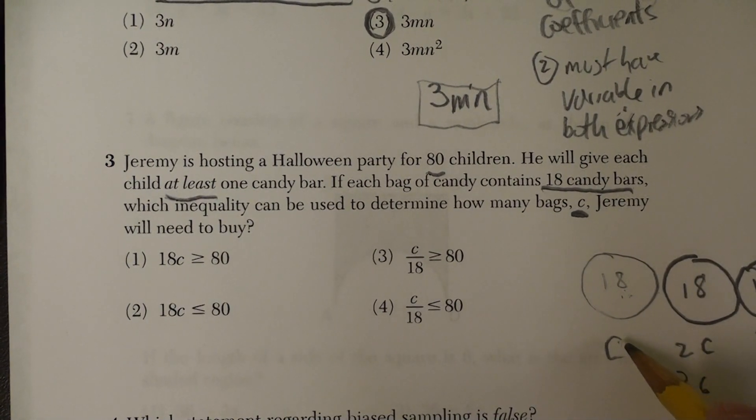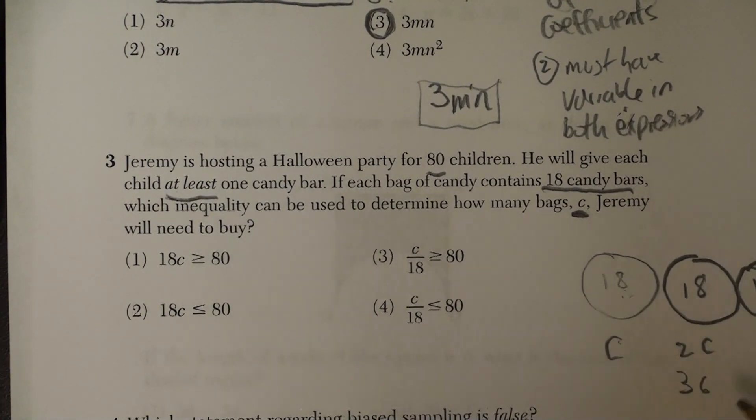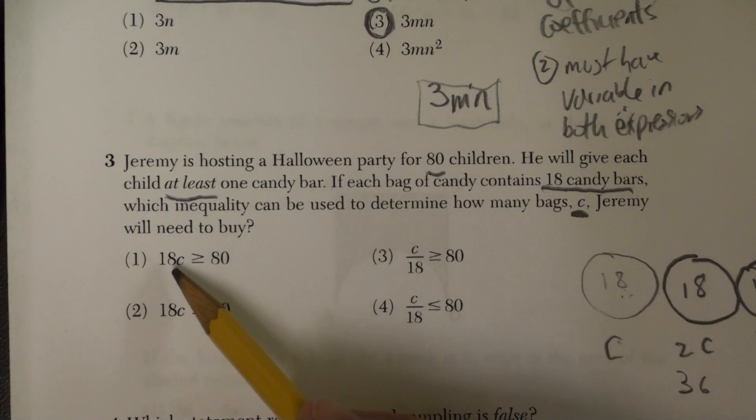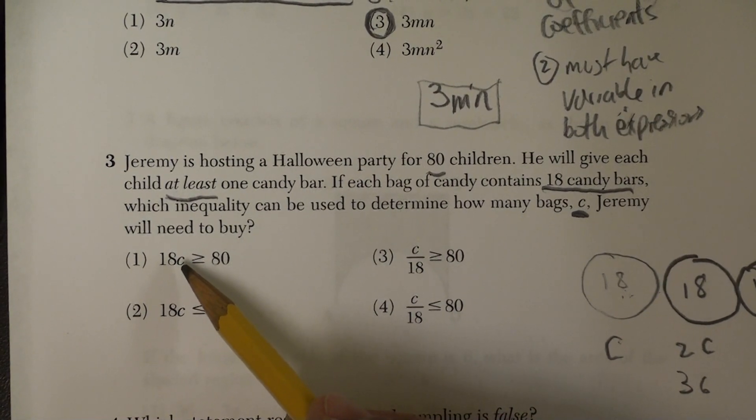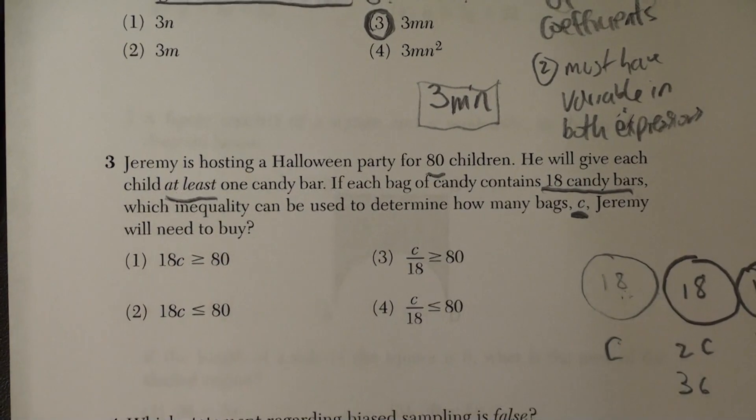The pattern here is we're multiplying the number of bags of candy by 18. So it would be 18 candy bars times C. The number of bags of candy has to be at least 80.